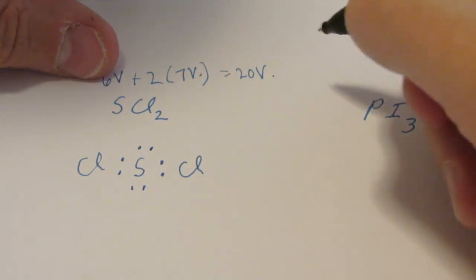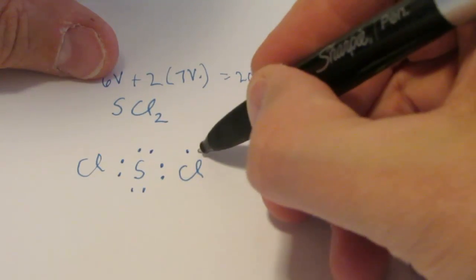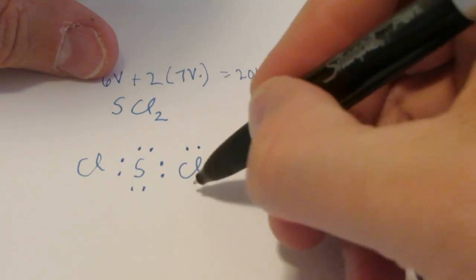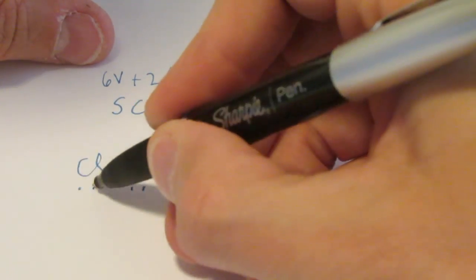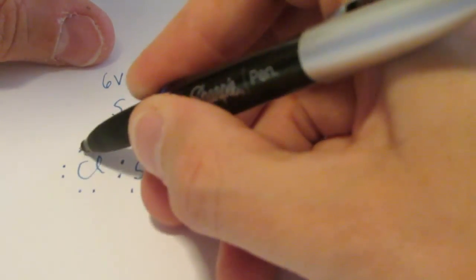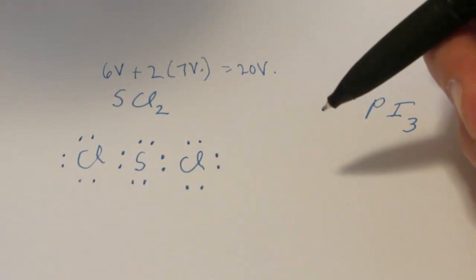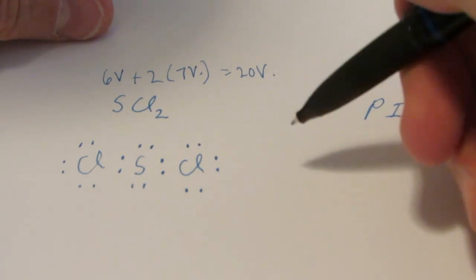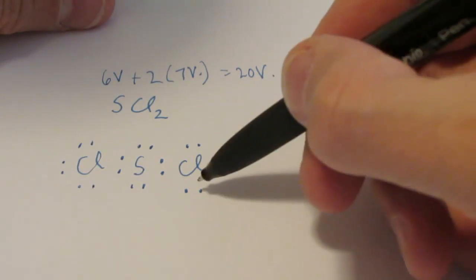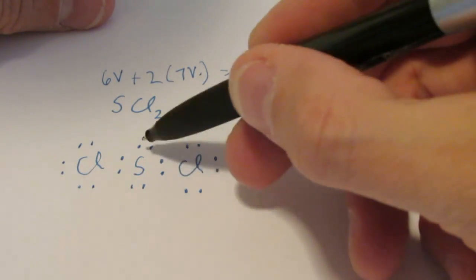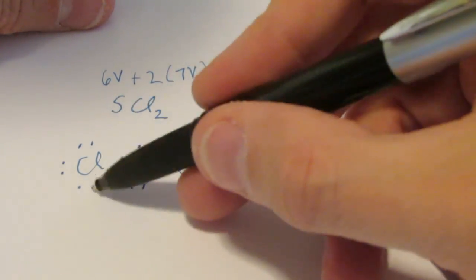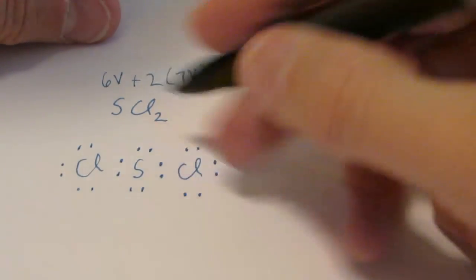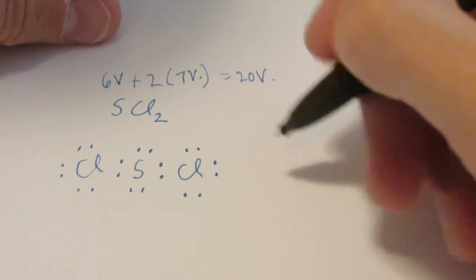What about the chlorines? Well this one on the right needs 3 more pairs, so that's easily done. And this on the left needs an additional 3 pairs. Let's see how many valence electrons I've used up of my 20. Hopefully I've used exactly 20 and I can move on. 2, 4, 6, 8, 10, 12, 14, 16, 18, 20. That's perfect. That's a great Lewis structure for SCl2.